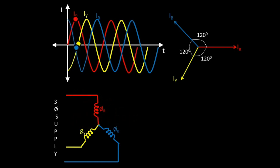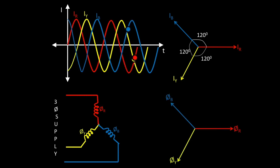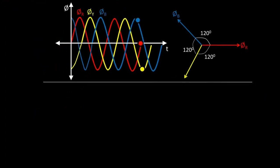So we are having three fluxes. Since the angle between the three currents was 120 degrees, the angle between these three fluxes will also be 120 degrees — there is a phase displacement of 120 degrees between each phase. So here we can see three fluxes φR, φY, and φB having phase displacement of 120 degrees. This is called three-phase flux. After giving three-phase supply to the three-phase winding, we have three fluxes which are 120 degrees apart from each other.